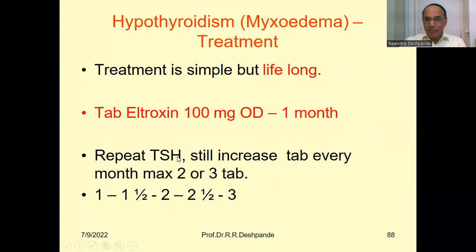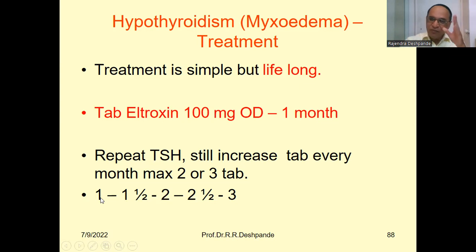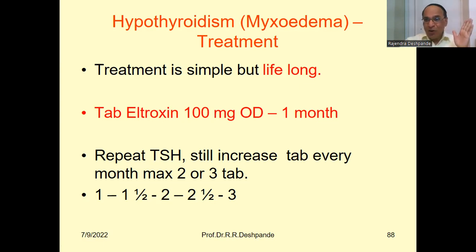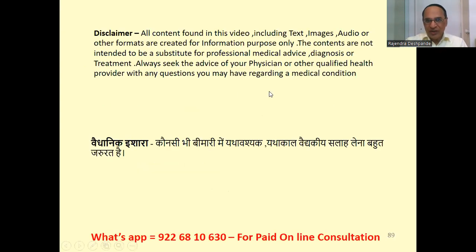After one month, repeat the TSH blood test. If TSH is still elevated, increase the tablet dose — for example, one tablet once daily, then one and a half tablets for one month, then check TSH again. If still not controlled, go to two or two and a half tablets. The maximum dose a doctor can give is three tablets. The dose should be increased slowly for tolerance.